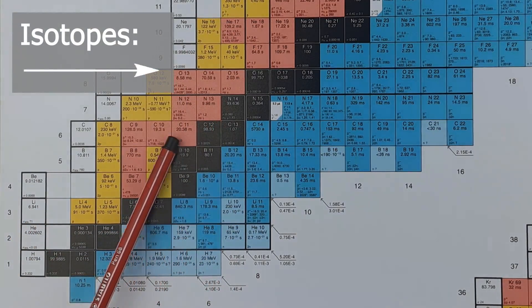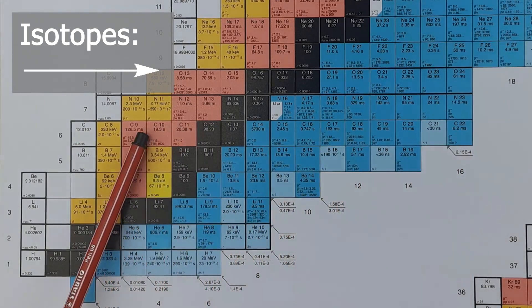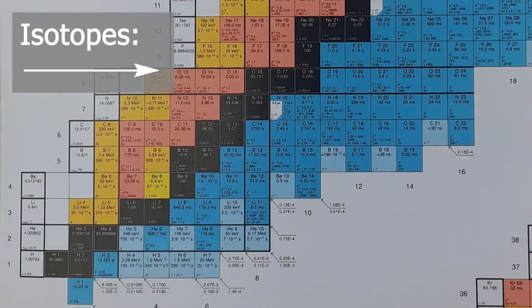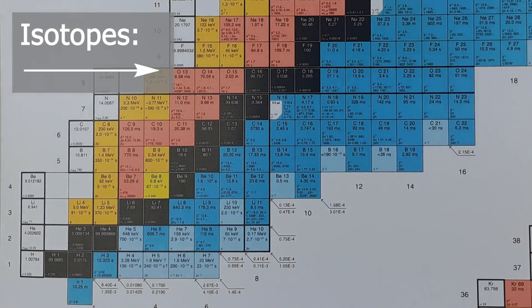Moving only along the x-axis changes the neutron number and not the proton number. So, the element remains the same. These nuclides lying on this axis are isotopes of each other. For example, carbon 12, carbon 13, 14, 15, and 16.